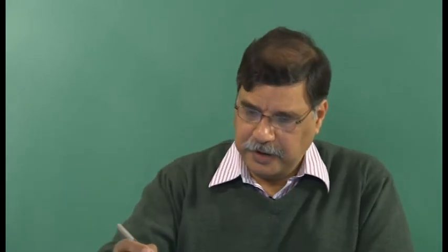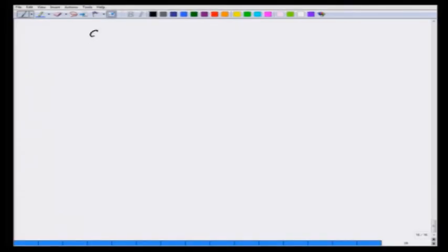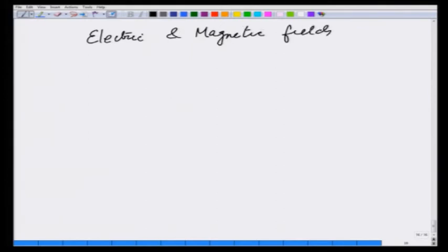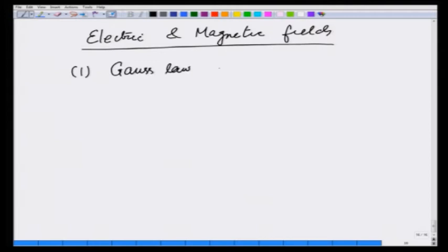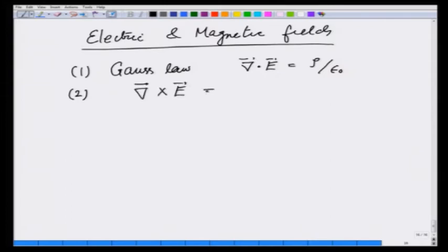Let us now summarize what we have learnt so far about electric and magnetic fields. They satisfy: the electric field satisfies Gauss's law, which is that divergence of electric field is given as rho over epsilon 0, where rho is the electric charge density. Then we have learnt about curl of electric field arising due to changing magnetic field, which is Faraday's law.